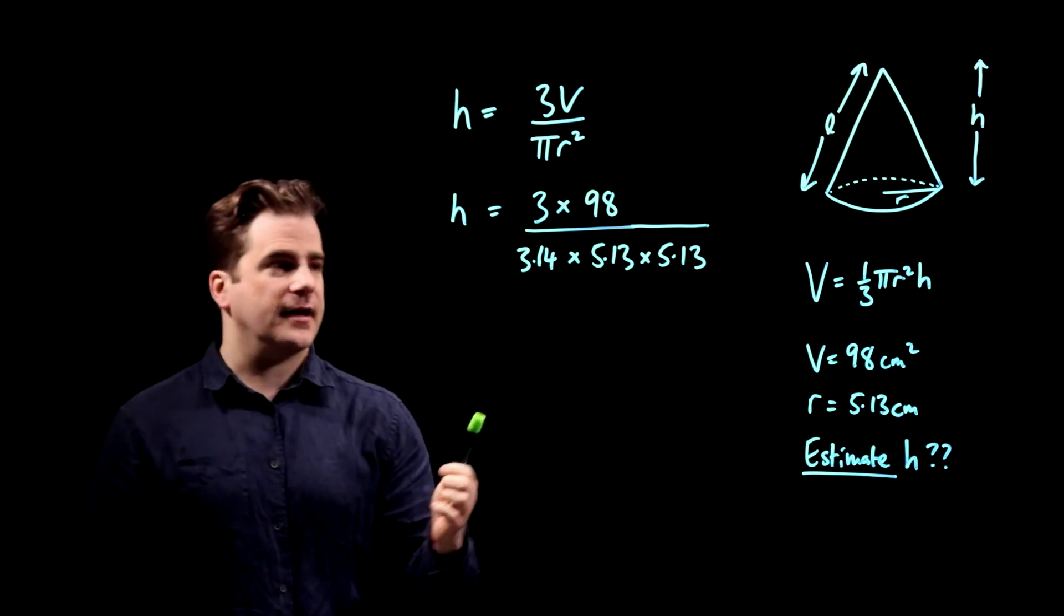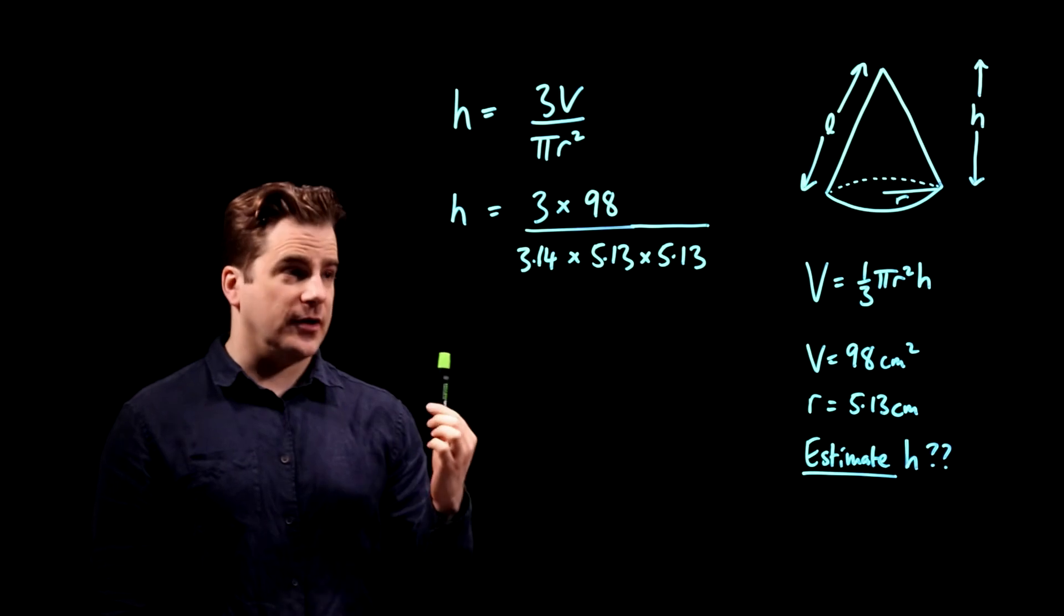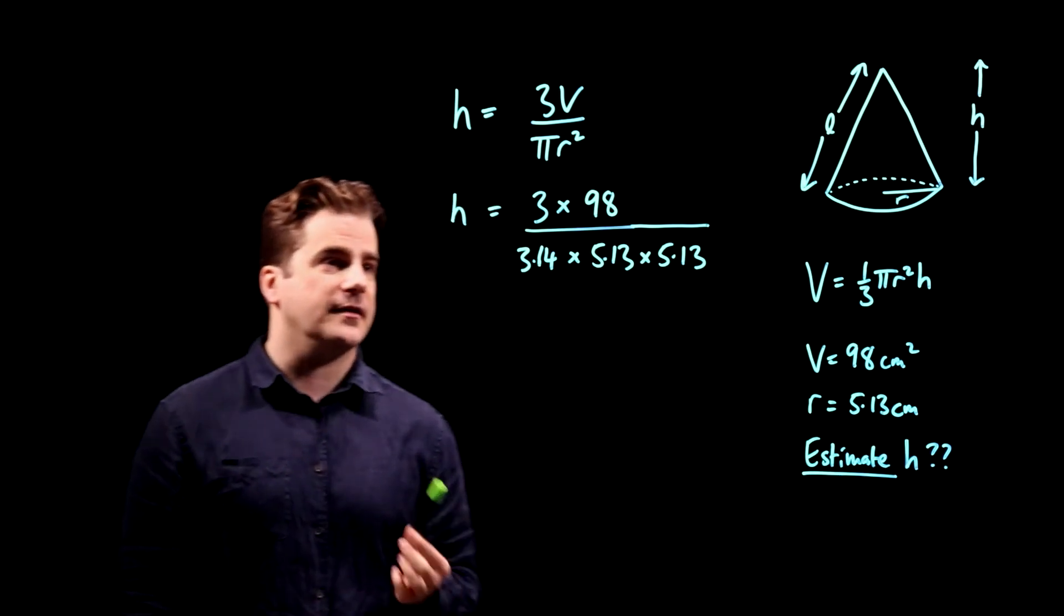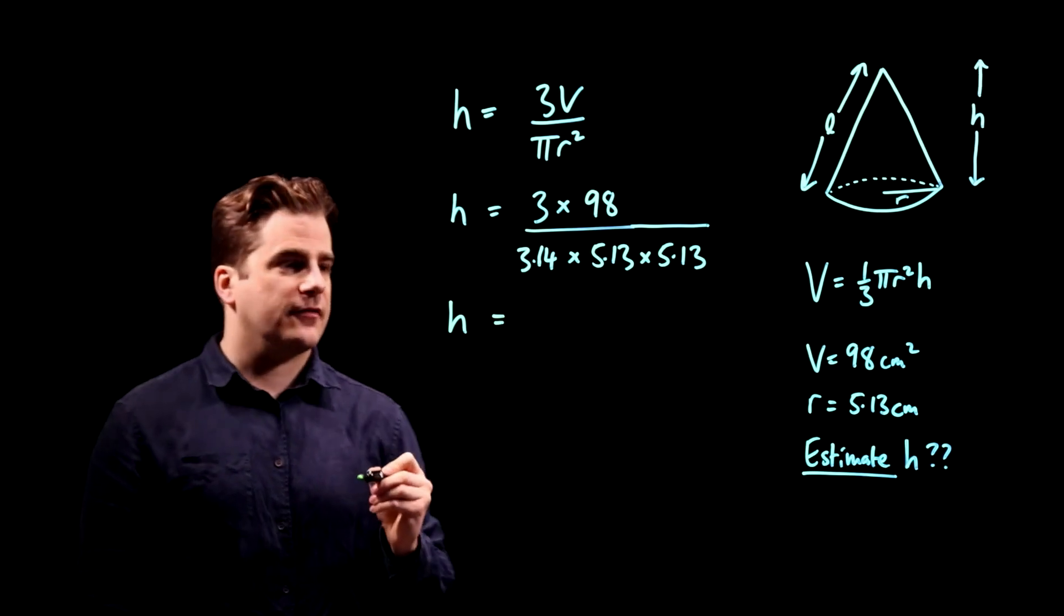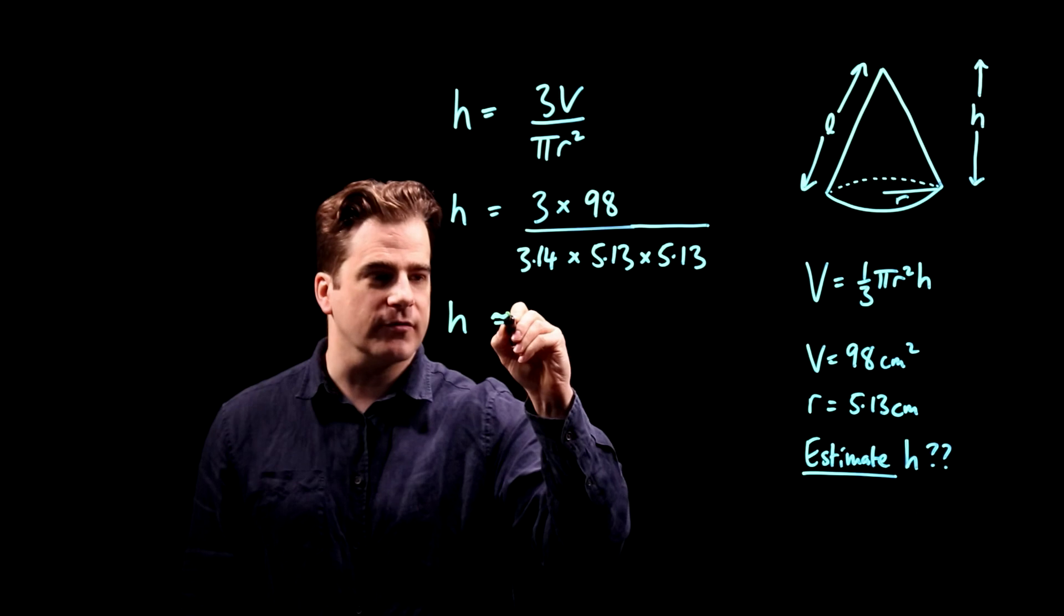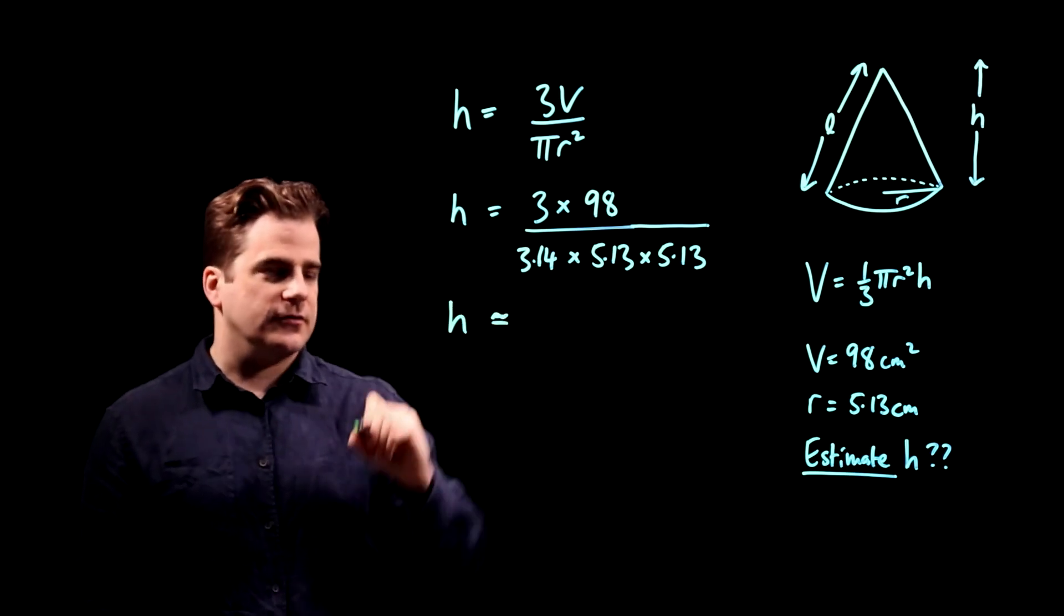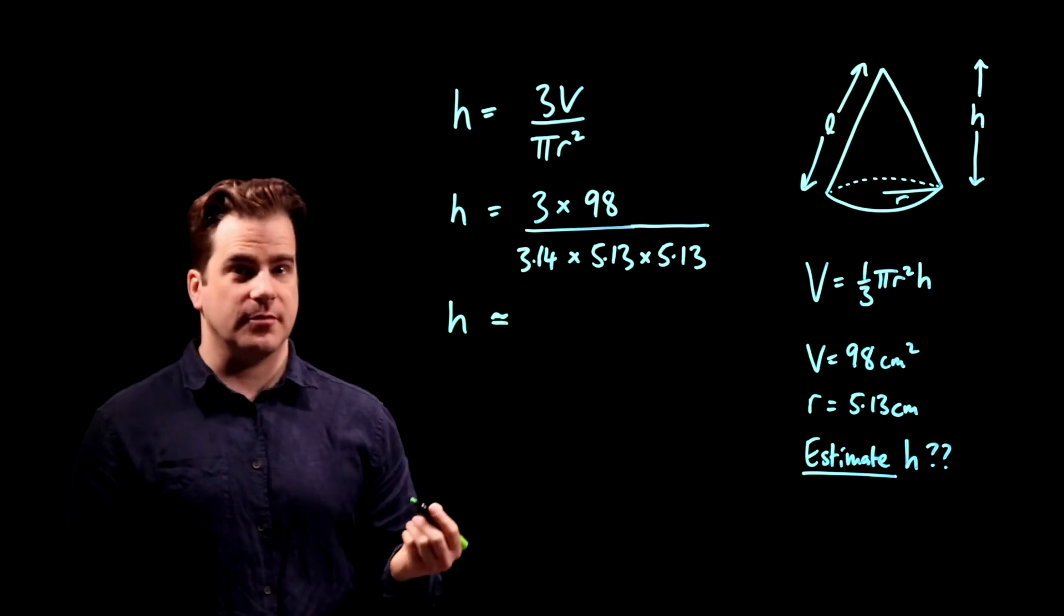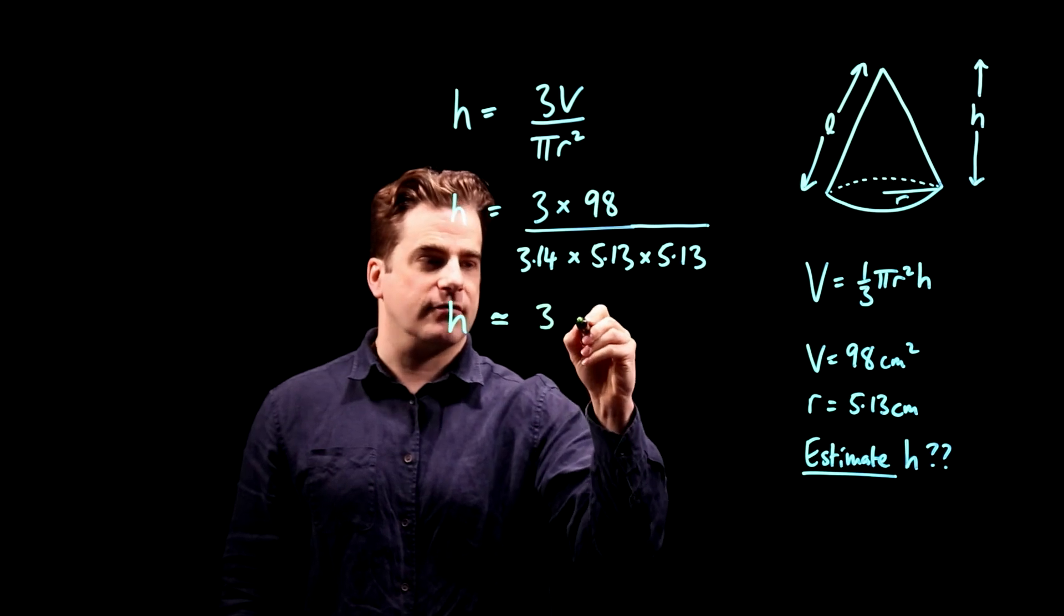So if we had a calculator, we'd stick that into the calculator and work out the exact value of h. But we're not allowed to calculate it, we have to estimate. So this is where h is approximately equal, squiggly equals means approximately equals to. Three is just three, we'll definitely leave that alone. That's a nice round number.